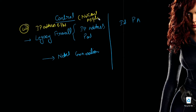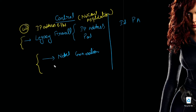A legacy firewall is not able to understand whether you are accessing Google.com, a malicious website, adult content, or a news website. It cannot identify what application or content is being accessed. This visibility and control capability was introduced in next generation firewalls, which have control up to the application layer.